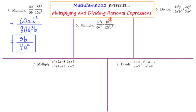Now the 8 and the 12 reduce by 4s to give 2 thirds — so the 8 becomes a 2 and the 12 becomes a 3. Then the 3 on top from the 15 and the 3 on the bottom from the 12 cancel out. I think we're done with the numbers.